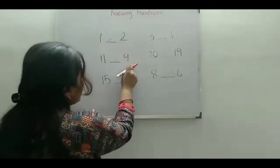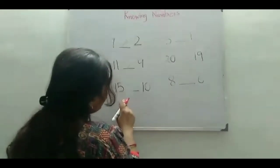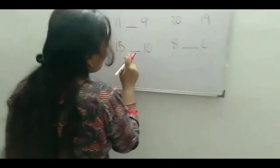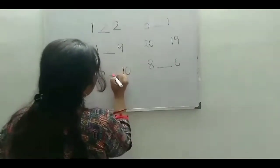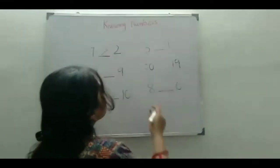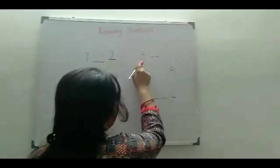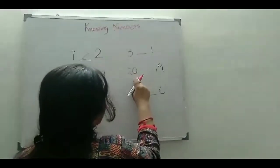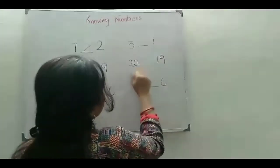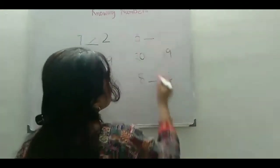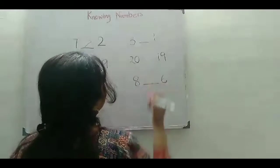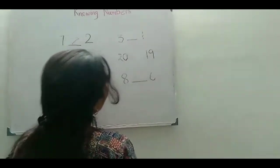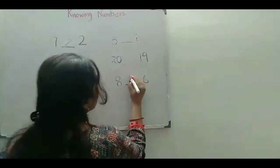11 greater than 9. Next one is 1 ten and 5 ones, which is 15, and here 1 ten and 0 ones, which is 10. We all know that 15 is always greater than 10, so the sign should be the greater than sign. Now children, you can see 3 and 1. 3 is always greater than 1, so the sign should be greater than. Next is 20 and 19. 20 is always greater than 19, so 20 greater than 19. Next one is 8 and 6. 8 is always greater than 6, so 8 is greater than 6.